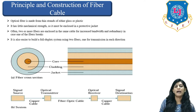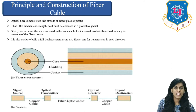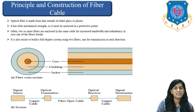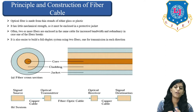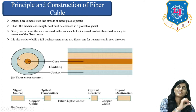If one cable is not working properly or has completely failed, we do not want to lose our data. So for safety it is suggested to use two optical fiber cables within the same casing. It is also easier to build a full duplex system using two fibers, one for transmission in each direction. Here you can see the fiber cross-section — it is simply like a wire.